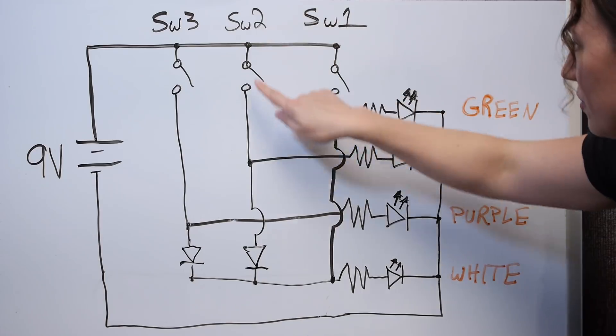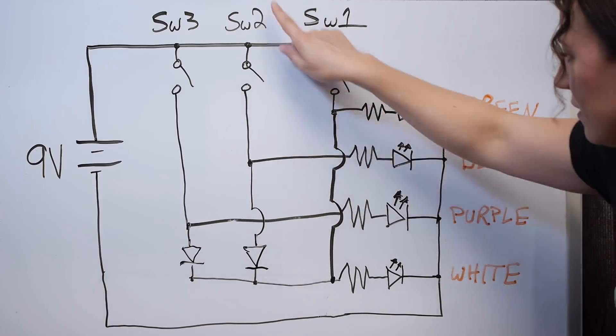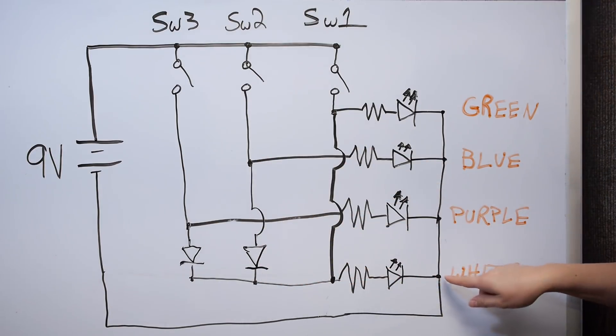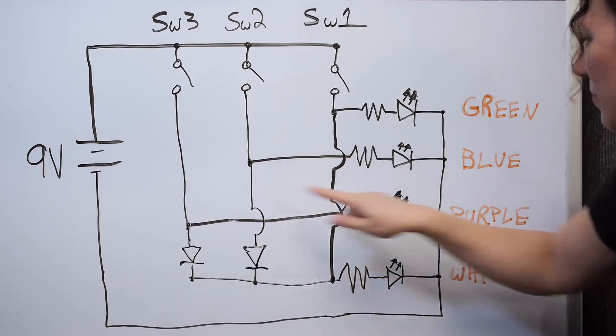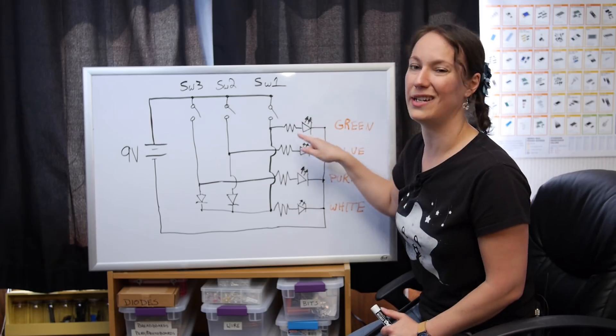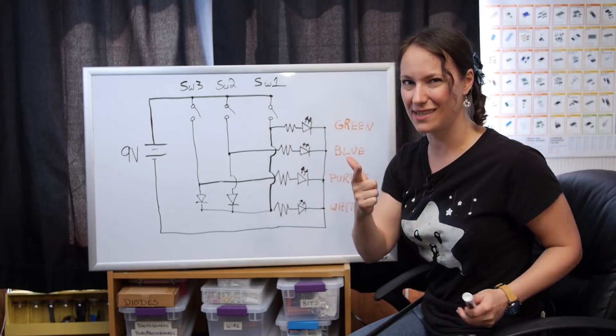Let's check switch two. Switch two is on. Comes on here. Good. Can go, goes down here. Can go through the diode. Goes through white. Awesome. Can't go back up to purple. But uh oh, it can still come back up here and turn on green. That's no good. So let's add a diode.